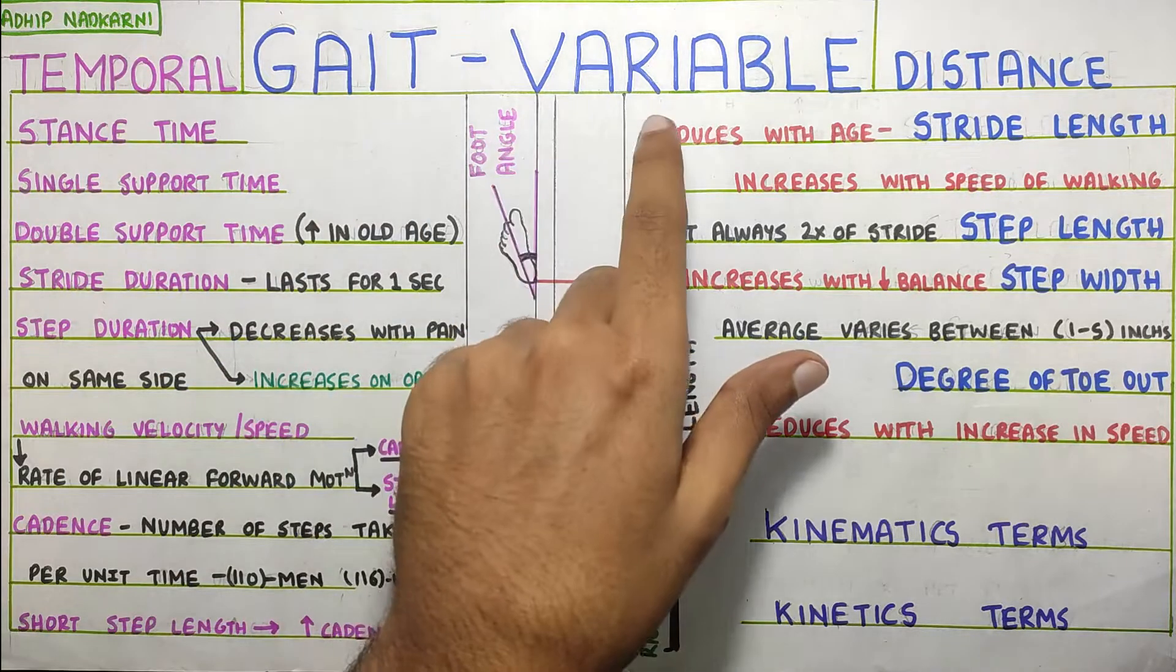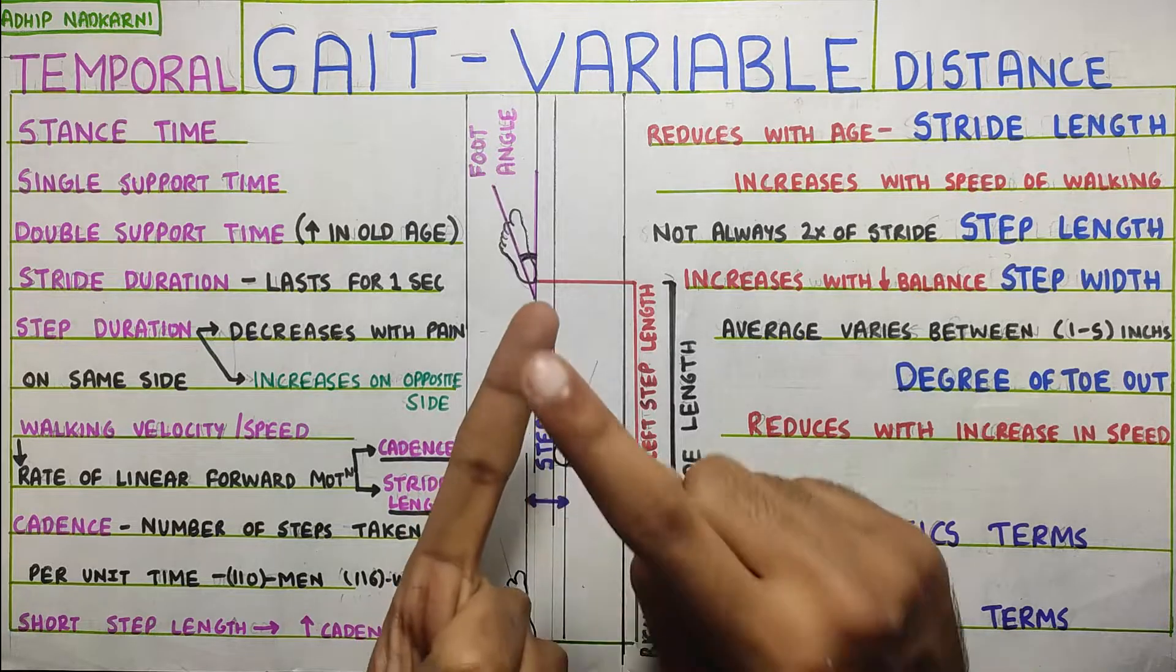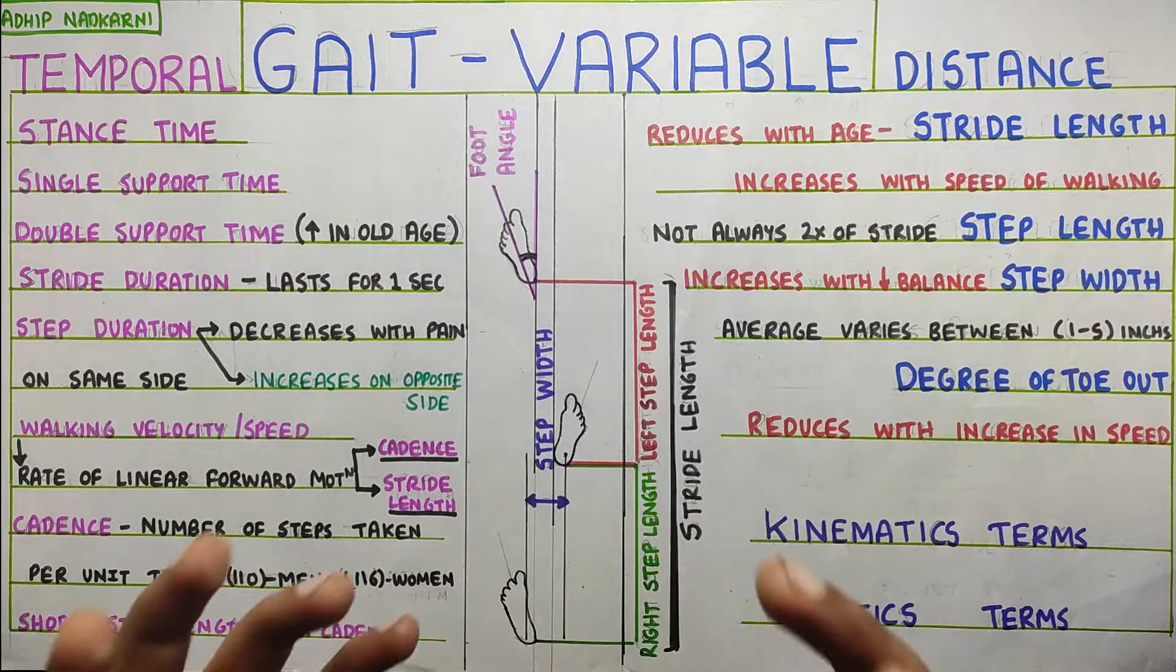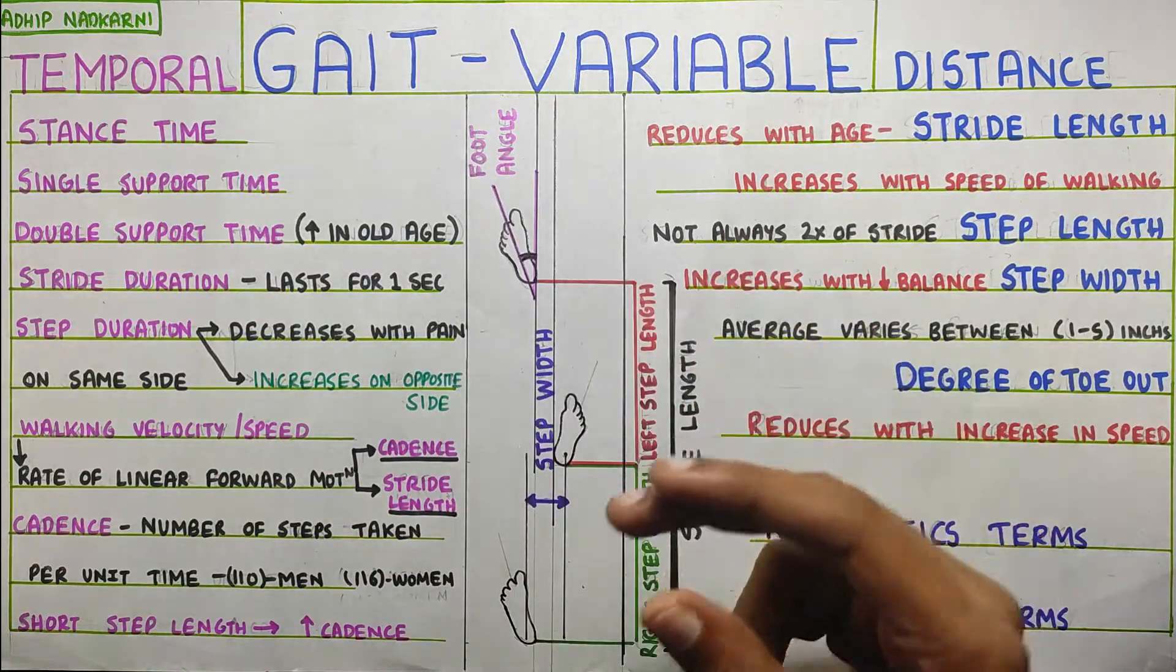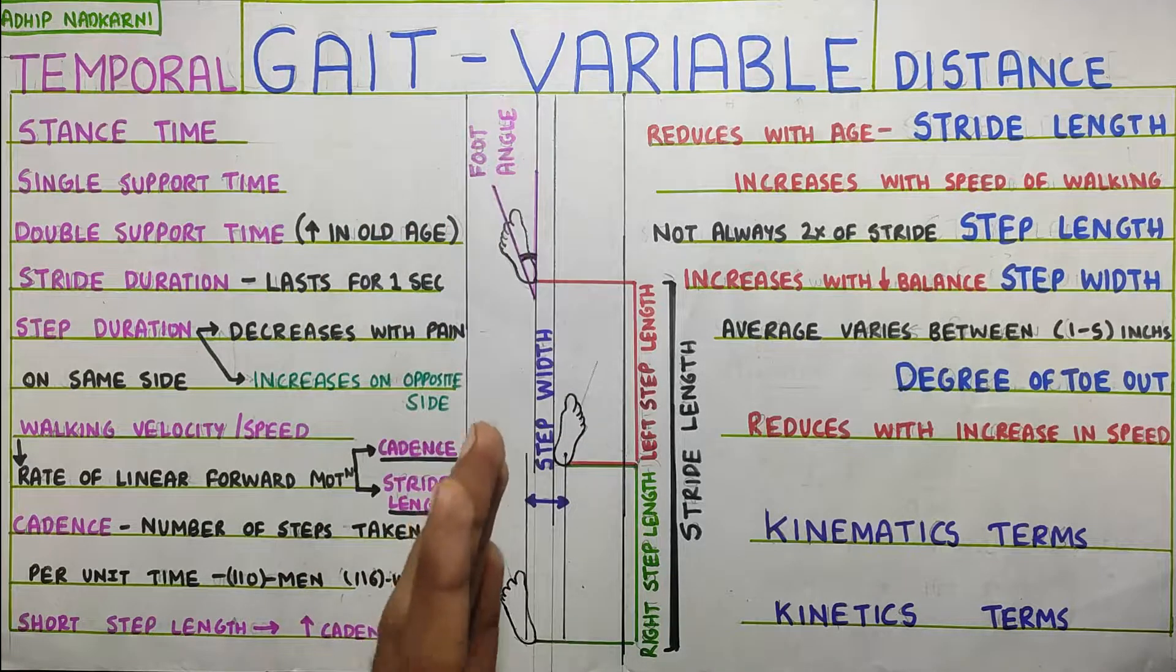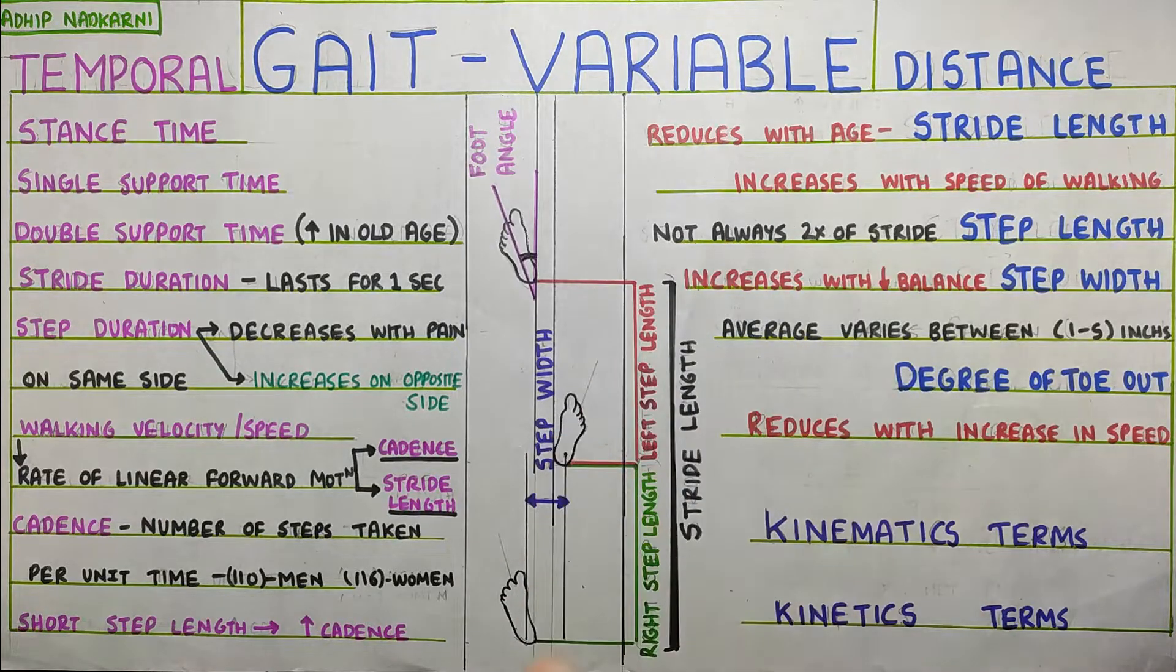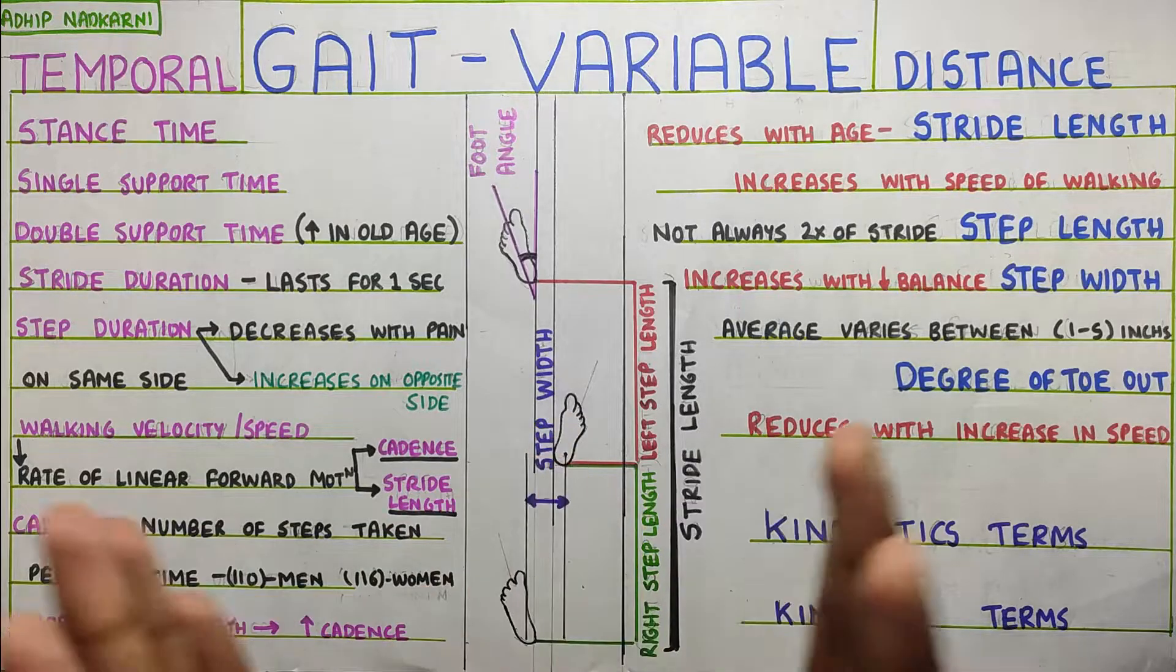So first of all, gait variables. Now variables are the ones which change, right? So these variables change with pain, with age, gender, range of motion, weakness of muscles. So that's the best part about these variables. So as these terms that we are going to discuss, as they change, it will help us in analyzing the gait. As in we can analyze the gait and see if it's different from the normalcy or if there is any deviation in the gait. Because these variables will be the ones which will show us if there is any problem, weakness, pain and other factors that are causing change in the gait. So that is the significance of it and that's why we are going to learn it.